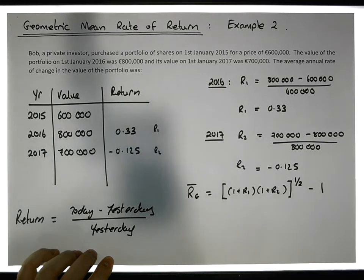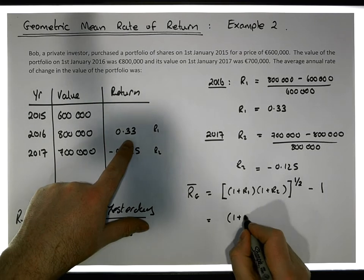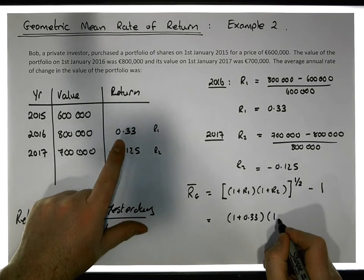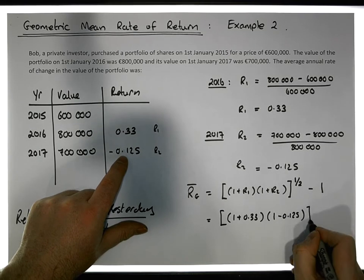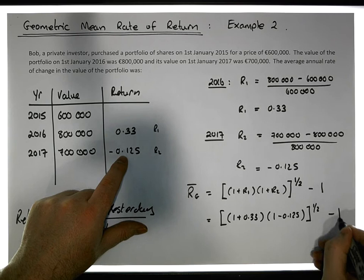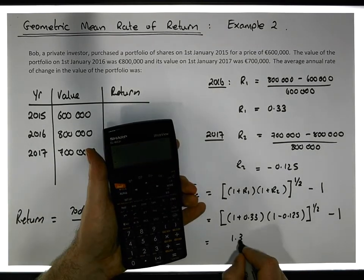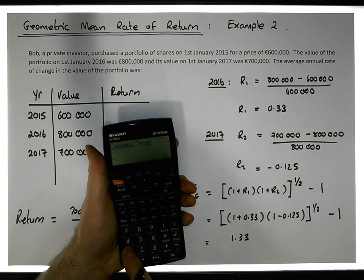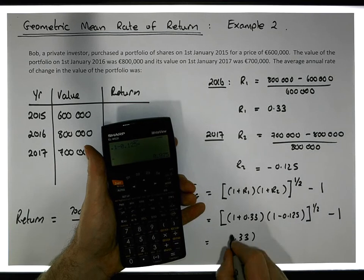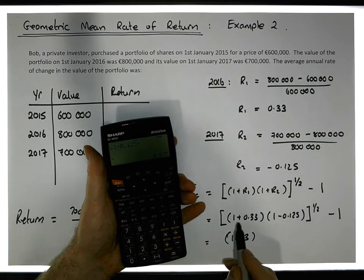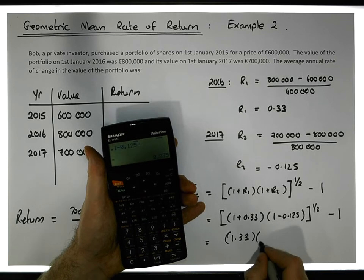In our case, this is (1 + 0.33) times (1 + (-0.125)), raised to the power of a half, and then minus 1. This gives us 1.33, and then 1 minus 0.125 gives us 0.875, which needs to be raised to the power of a half.